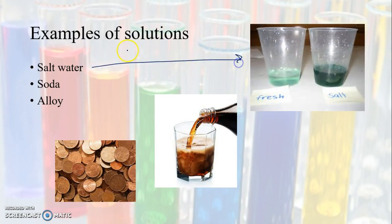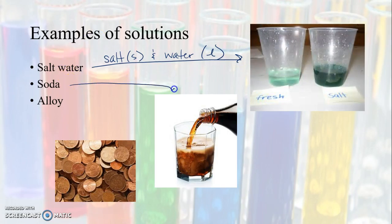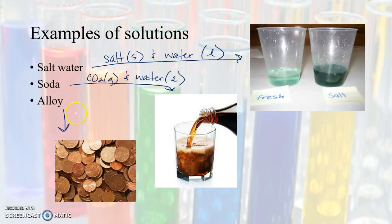Examples of solutions: salt water has salt — a solid — dissolved in water, a liquid. In soda, carbonation is a gas mixed in with water, a liquid. And for an alloy, you have two metals — two solids — mixed together. Since you can't just combine two solids directly, you melt them into liquids and then mix them together.